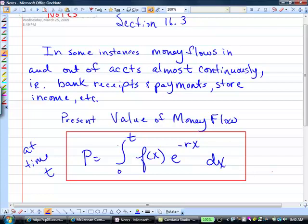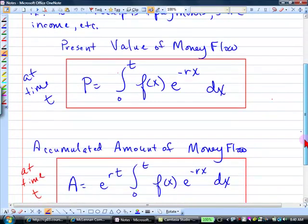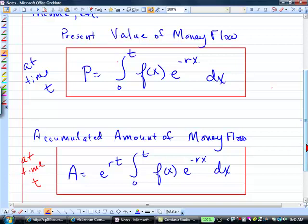It's not a formula you'll have to memorize, even for the final. That's a formula you'd be given. The other formula is called the accumulated amount of money flow. And if you compare these two, what's the difference? Well, inside, isn't that exactly what that is? So what are we just doing? We're multiplying e to the rt times this.